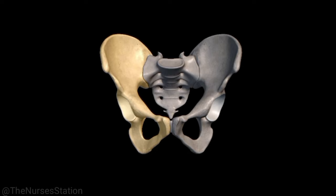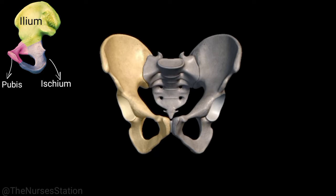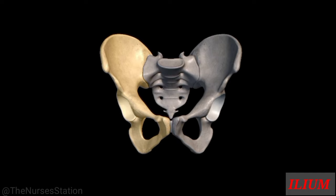We will talk about these bones one by one. First, the innominate bone — there are two innominate bones, also called hip bones, each formed by three parts: the ileum, the ischium, and the pubis. The ileum is the largest of the three parts of the innominate bone and is a large flared-out portion.